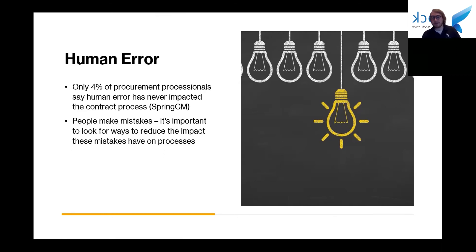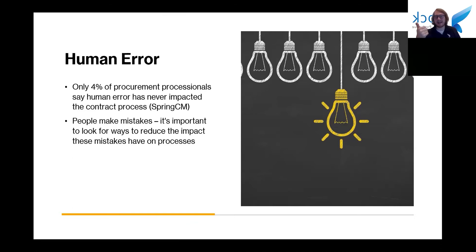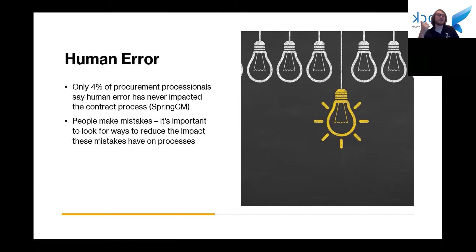People make mistakes, and that's why it's super important that you look for ways to reduce these mistakes and their effects on the process. Situations come up where people forget tasks, overlook small issues that get worse with time, make spelling and grammar mistakes in a contract that can have tangible effects, lose documents, miss tasks to notify the right people, or just miss deadlines in general. All of these are major hiccups in the contract management process and can cause major issues for your company.